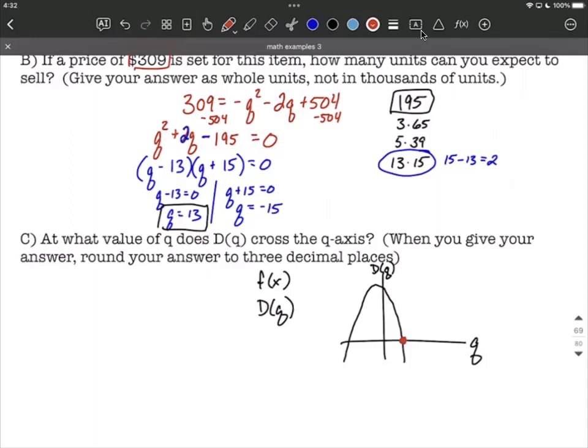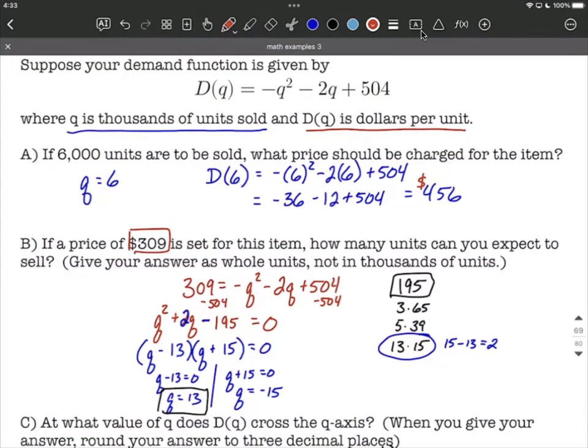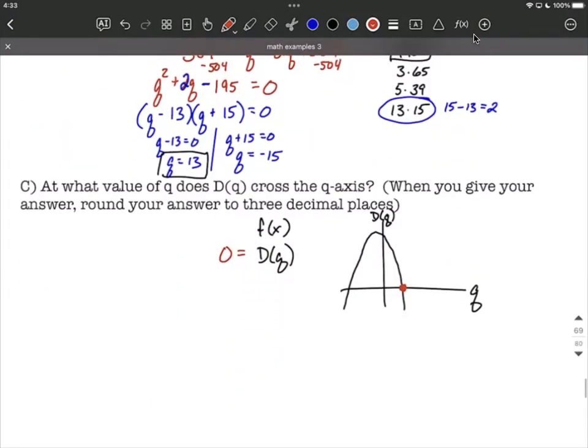Well, when that happens, that's kind of like finding where do we have x-intercepts. That's when the entire function equals zero. So in our case, we're going to fill in zero for D(q). And again, we only want our quantity to be positive. It doesn't make sense to be selling a negative quantity. So to get this, I'm going to replace the left-hand side of our original function with zero. So zero equals negative q squared minus 2q plus 504.